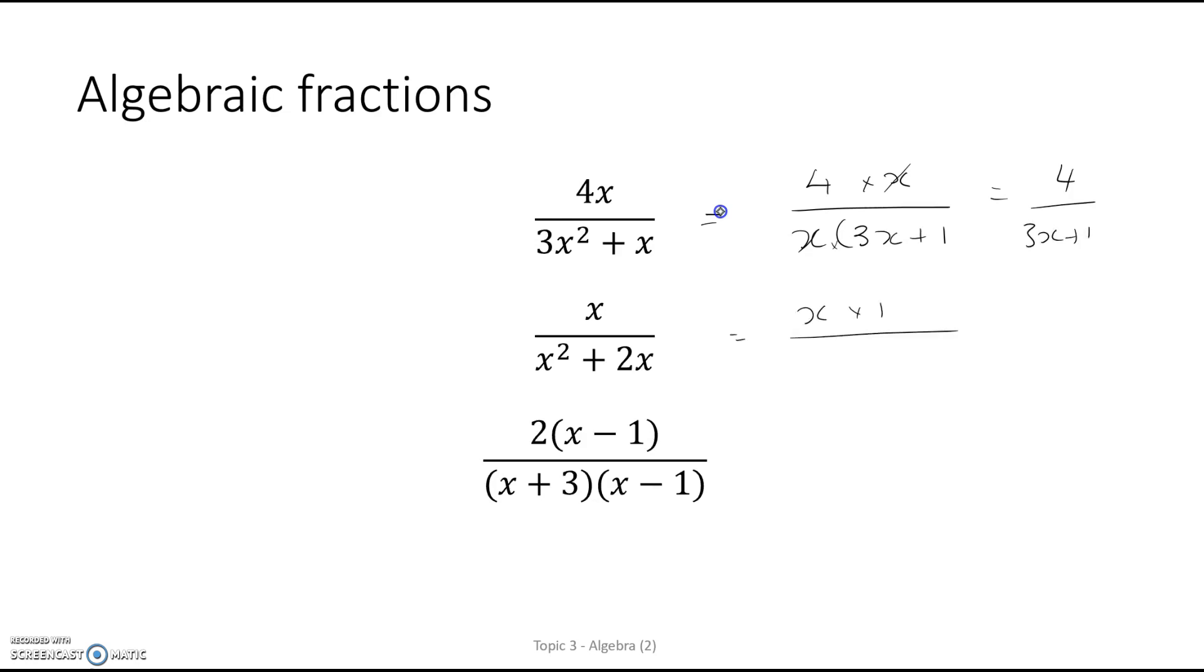x times 1 on the top line. x times x plus 2 on the bottom line. Cancel the x's. 1 over x plus 2. Now the next one we don't even probably need to write out. We can see that there's a common factor of x minus 1 and we're left with 2 over x plus 3.